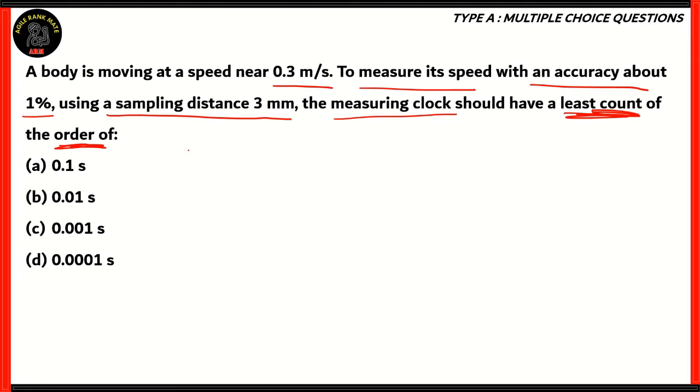Well, for that, we'll have to use the formula for speed. Speed equals distance over time. Now, what's the speed that we have here? 0.3 meters per second. Now, that is equal to 3 millimeters, which is 3 times 10 raised to minus 3 meters over time in seconds. So, therefore, the time will be equal to 3 into 10 raised to minus 3 over 3 into 10 raised to minus 1.